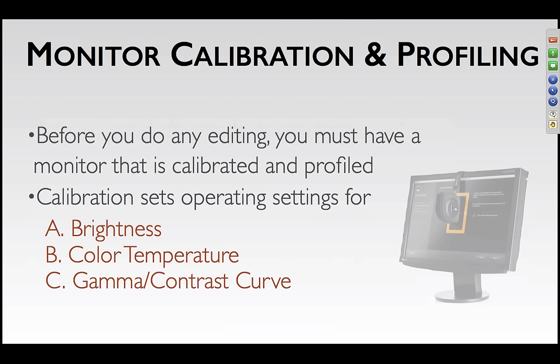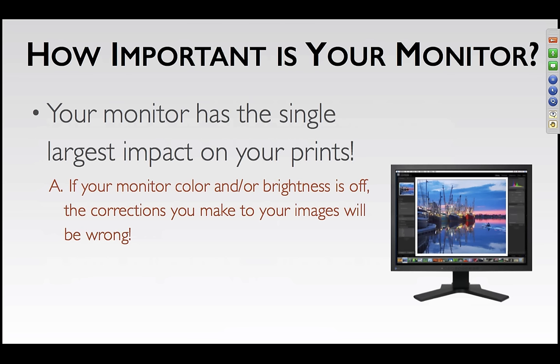Before you do anything, your monitor has to be under control. You've got to get it as good as it can be because this is where you're making all your editing decisions. There are two words used for this: calibration and profiling. Calibration sets up the monitor to a default set of specifications — it sets the brightness, color temperature, and contrast curve. Profiling is where the colors are corrected after the calibration part is taken care of. You're making your image adjustments based on what you see on the screen, so if the screen is off, you're going to be guessing.